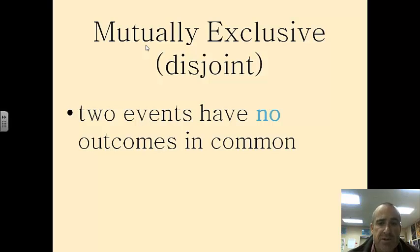Two events are called mutually exclusive, disjoint, if they have no outcomes in common. So nothing in common. So for example, on a dice, a two or a five. I can't get a two and a five.